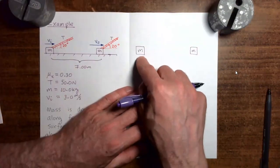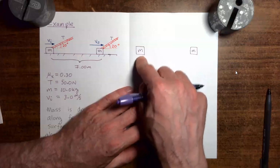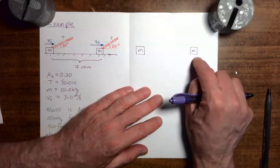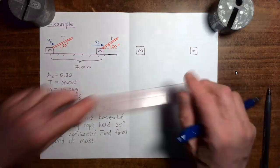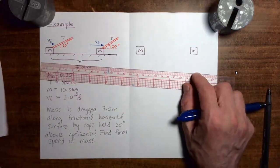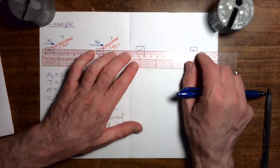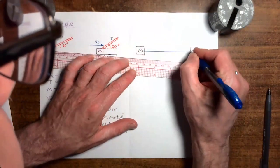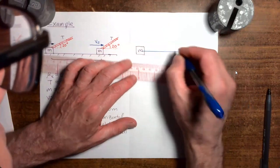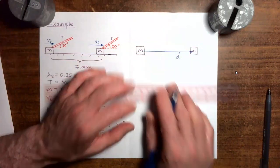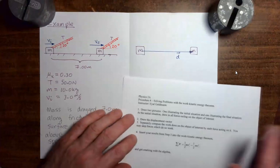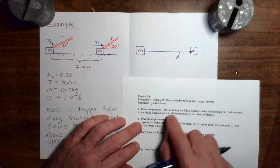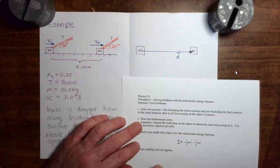So I start by drawing the mass over here — that's the initial position — and then draw the mass over here — that's the final position. Then, having drawn the mass at the initial position and final position, I can connect them using the displacement vector. This was actually step two, to draw in the displacement vector, so I'm going to be following this sheet a little bit out of order.